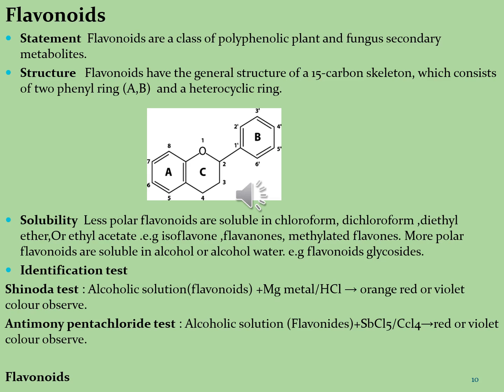Flavonoids are soluble in less-polar solvents, high-polar solvents and combinations of organic and water solvents. Less-soluble fractions include isoflavones, flavanones and methylated flavones, soluble in chloroform, dichloromethane, diethyl ether and ethyl acetate. Flavonoid glycosides are rich in alcoholic and aqueous-alcoholic solutions. Flavonoids are identified by the Shinoda test — alcoholic solution with magnesium metal and HCl gives orange, red or violet color — and the Antimony pentachloride test — alcoholic solution added to SbCl5 and carbon tetrachloride gives red or violet color, both indicating flavonoids.